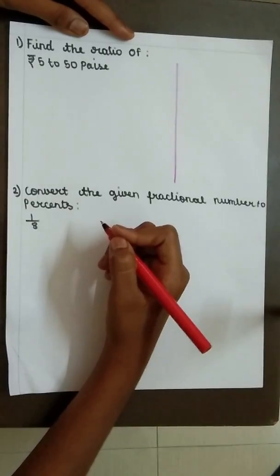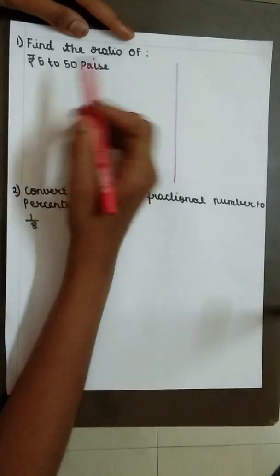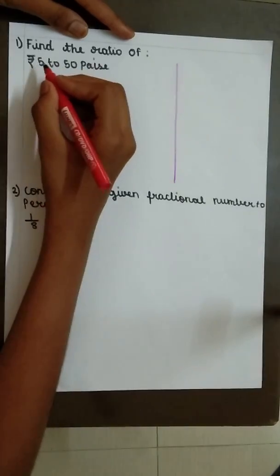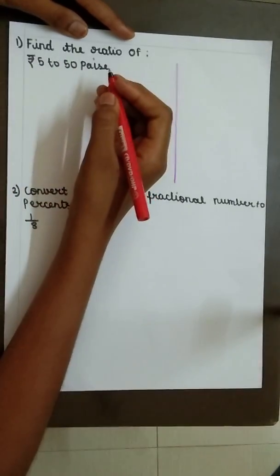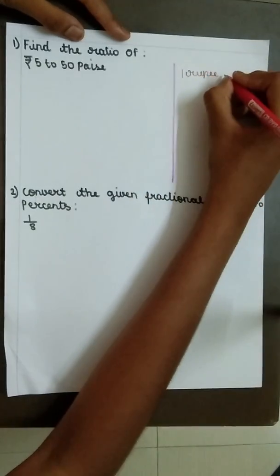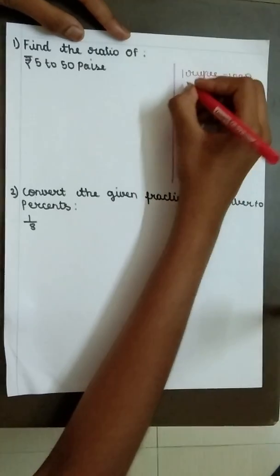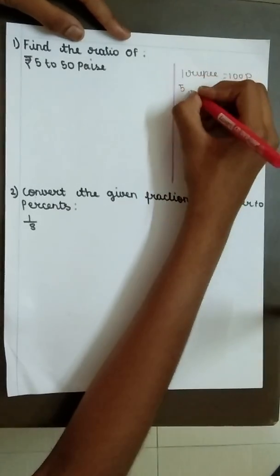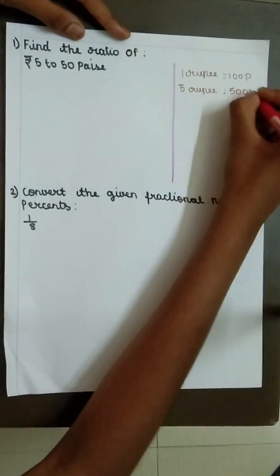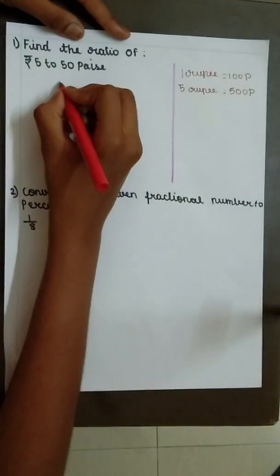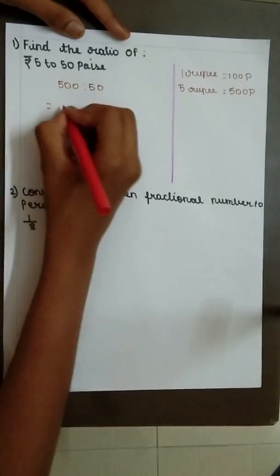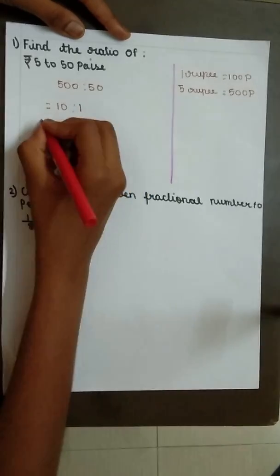Now let us see some example sums. Find the ratio of rupees 5 to 50 paise. We should change rupees into paise. So 1 rupee equal to 100 paise. Therefore, 5 rupees equal to 500 paise. So 500 is to 50. The answer is 10 is to 1.